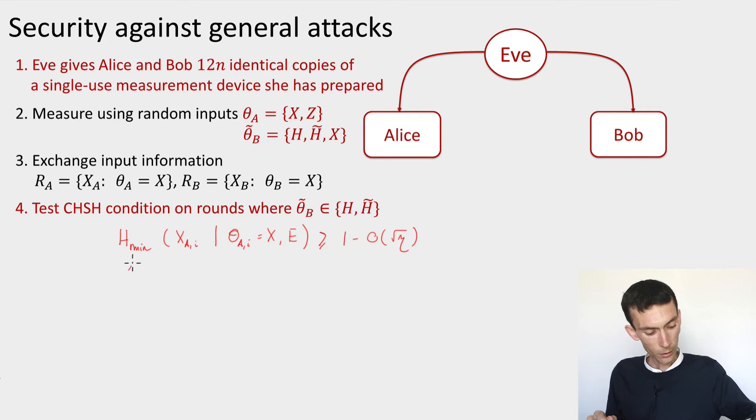And we obtained this for rounds that are in the testing rounds, and we were able to conclude that the same condition up to a small loss held for these rounds which are used for the raw key, and this was using a concentration bound and independence. But I also told you that you could get a very similar bound using this concentration bound that we saw a couple weeks ago that simply uses the fact that the test rounds are chosen uniformly at random. So this is okay.